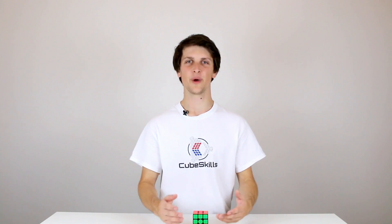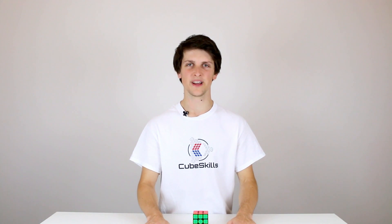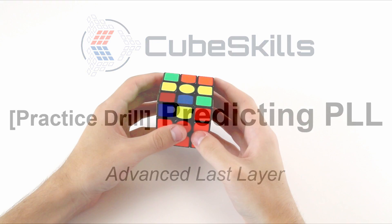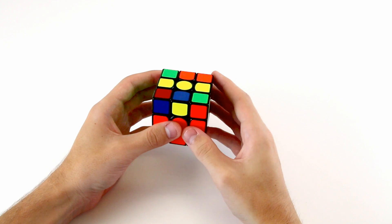This practice drill is a little bit weird and it also works in weird ways. Basically we're going to finish F2L and then try and predict what PLL case we're going to get. This drill is called predicting PLL.